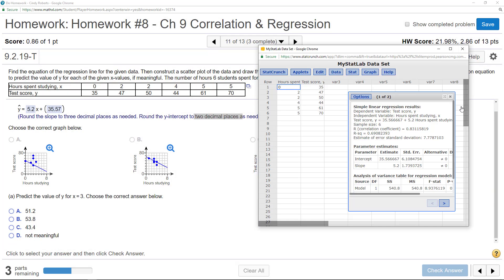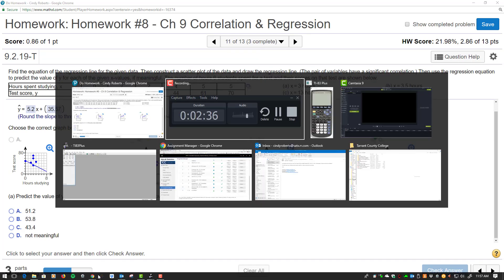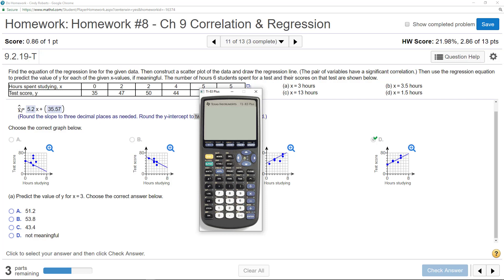Now it says predict the value of y for x equals 3. Well, what that means is use your prediction equation here where x equals 3. So 5.2 times 3 plus 35.57. I'm just using this prediction equation.